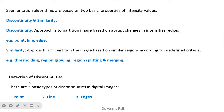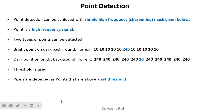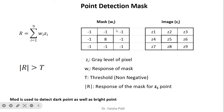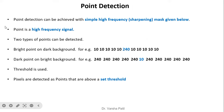In this video, the detection of points and lines is covered. Point detection can be achieved with a simple high-frequency mask — that is, a sharpening mask. This mask is used for detection of the point at the center, which is 8, while all surrounding values are minus one.